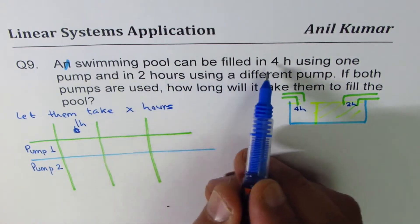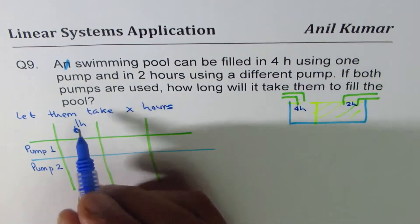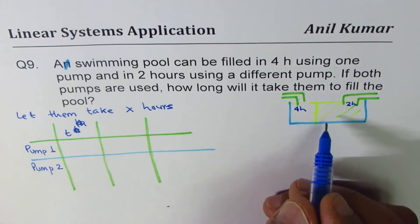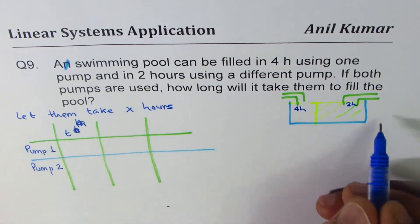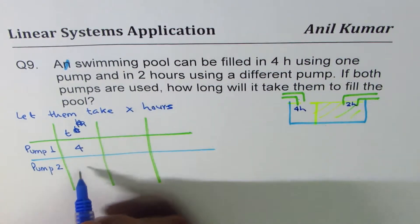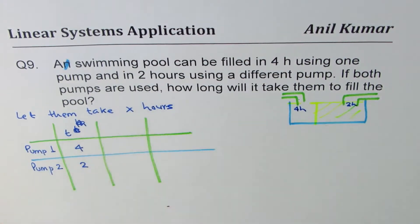A swimming pool can be filled in four hours using one pump. So let me write time taken to fill the pool is four hours using the first one and two hours using the second one. Correct? So that is given to us.